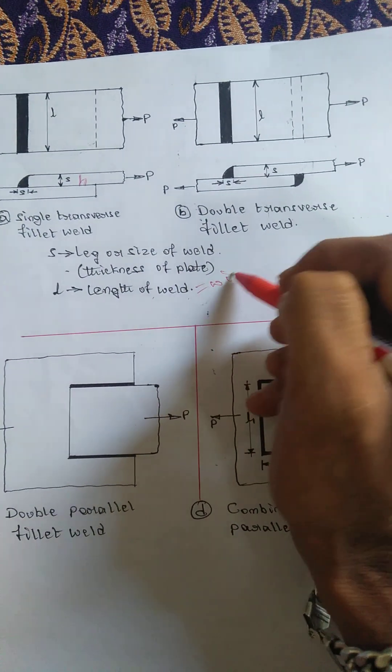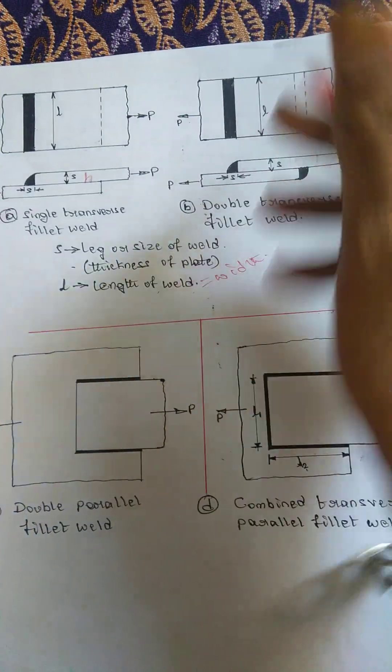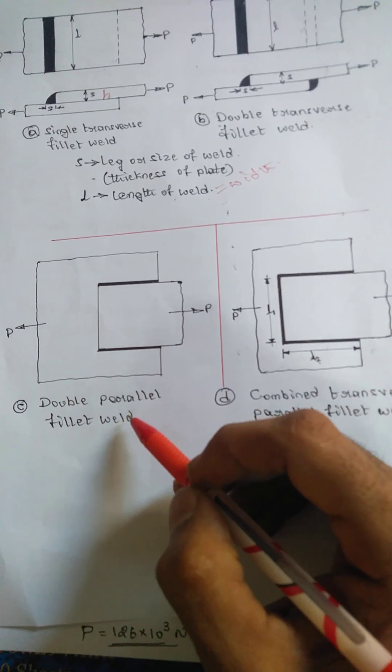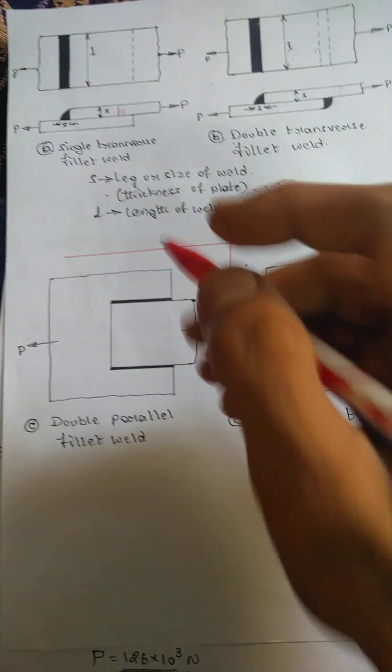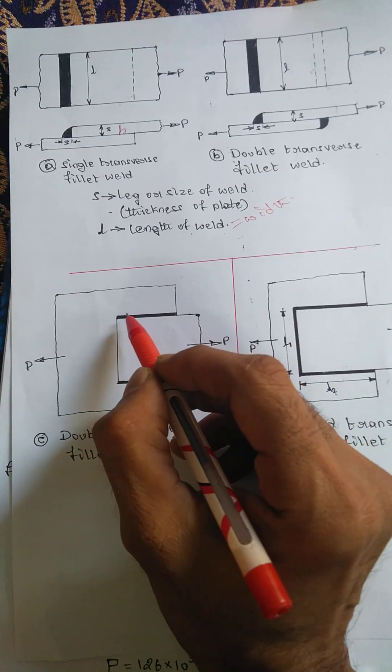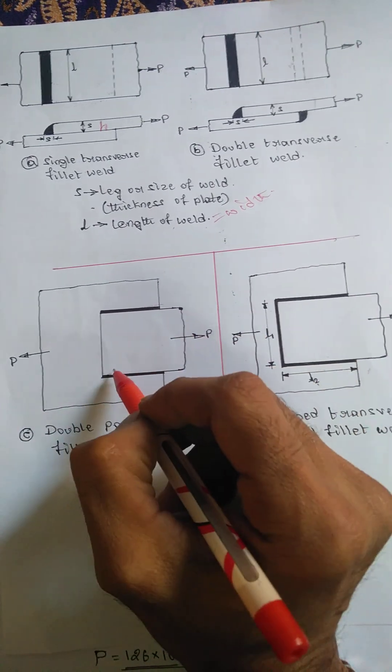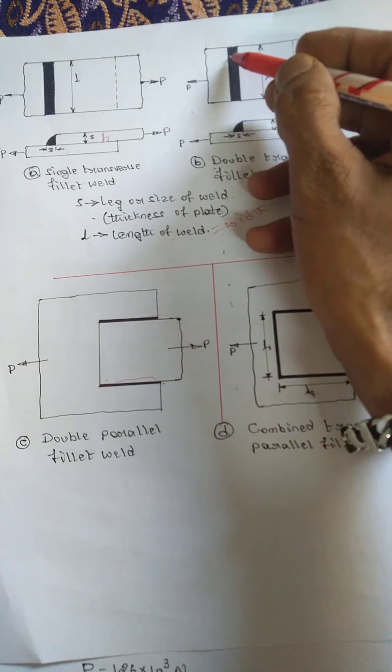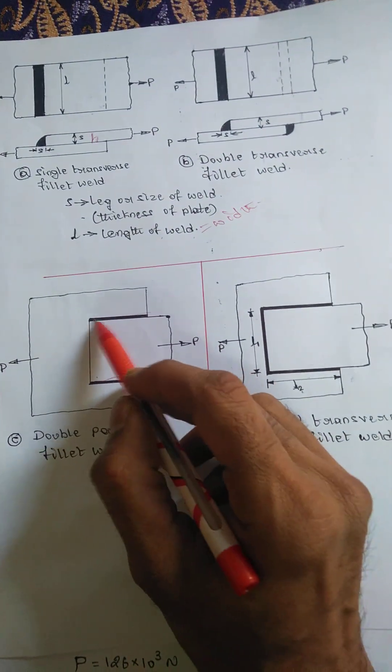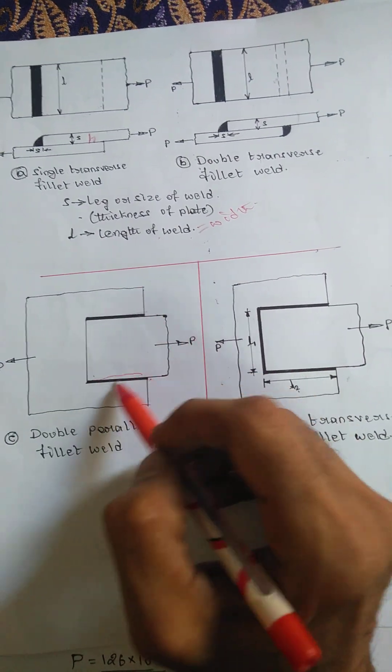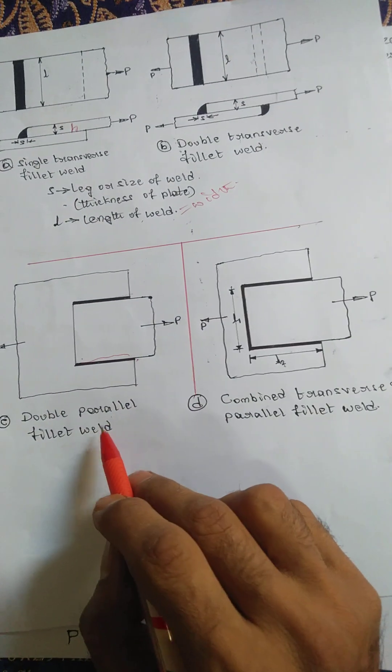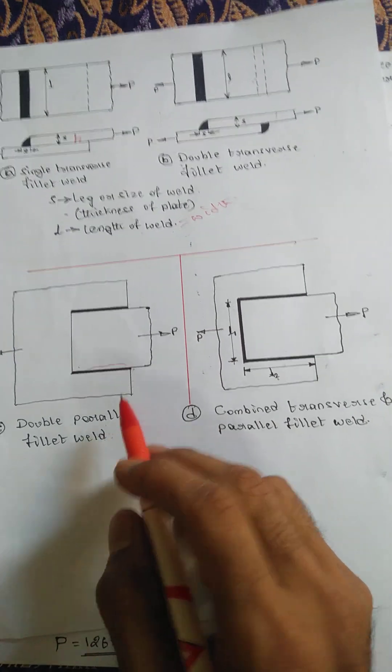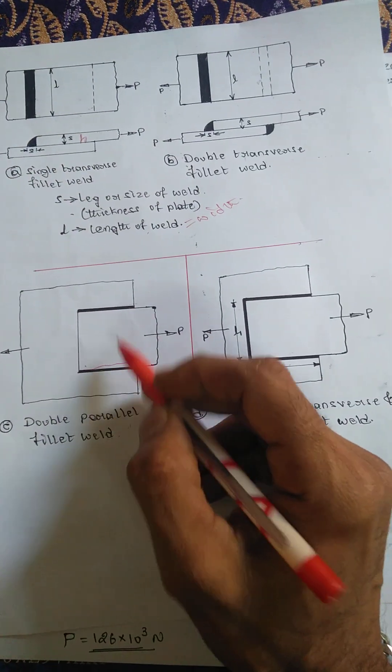Another type is double parallel fillet weld. In double parallel fillet weld, welding is carried out on the sides of the plate, two sides of the plate. In transverse weld it is on the front side of the plate, in this one it's on two sides of the plate. This double parallel fillet weld is also called longitudinal weld on two sides.